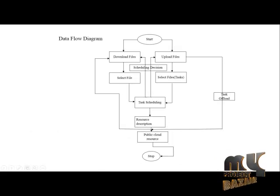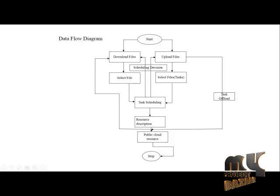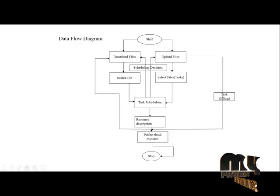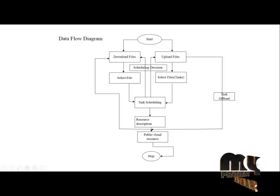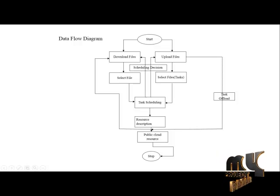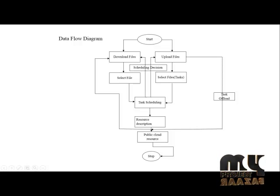This is our project data flow diagram. First, we start the program. After starting, we have two options. After user login, we can either upload files to the cloud or download files from the cloud. If we choose to upload files, we have to select the set of files.